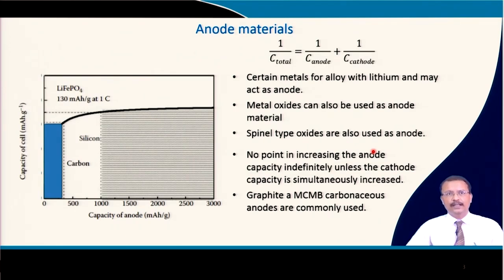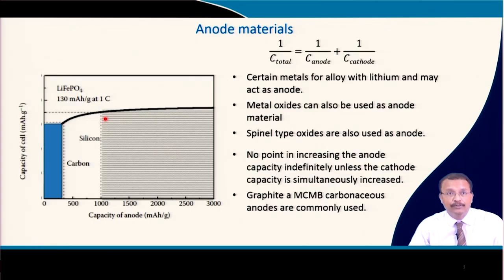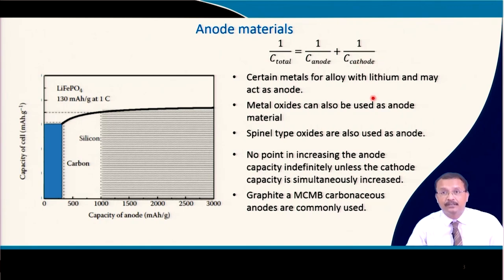You already know that there is no point in indefinitely increasing the capacity of the anode, because if you do not increase the capacity of the cathode then it will not be beneficial. It is basically two capacitors connected in series, so if one is abnormally high and the other is low, then the total capacity will be lower than the capacity of that particular electrode.